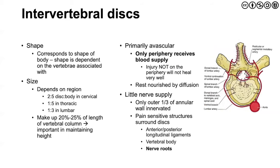Intervertebral discs correspond to the shape of the body, so they look different in the cervical versus the lumbar spine, and their size is also different depending on the region. In the cervical spine it's about a two-to-five ratio, thoracic one-to-five, and in the lumbar one-to-three. If we were to take all of the discs from throughout the spinal column, we would find that they make up about 20 to 25% of the length of the vertebral column.